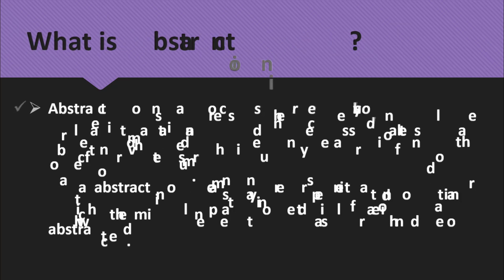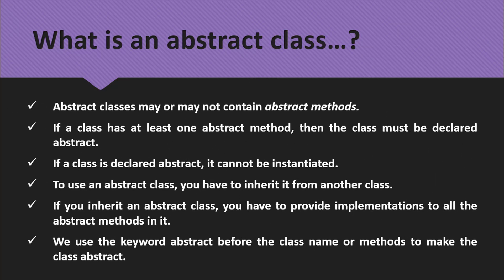Now let's see some important points of an abstract class. Abstract classes may or may not contain abstract methods. If a class has at least one abstract method, then the class must be declared as abstract. If a class is declared abstract, it cannot be instantiated — meaning we cannot create any object of an abstract class. To use an abstract class you have to inherit it from another class, and you have to provide implementation to all the abstract methods in it. We use the keyword abstract before the class name or methods to make the class abstract.